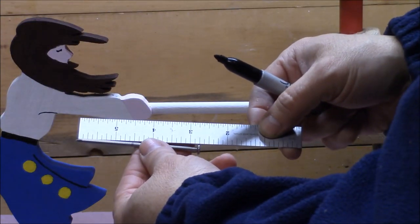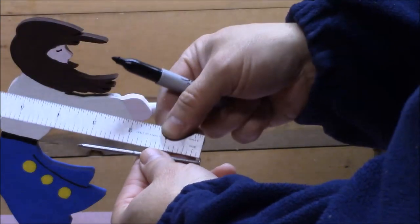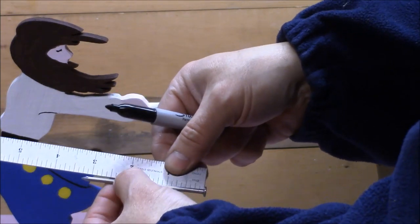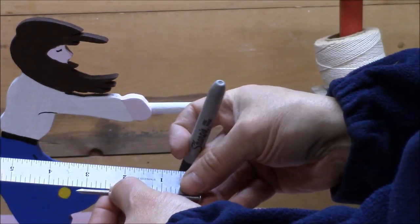I'll measure that distance, which is one and a half inches. I'll measure that from this end, mark it, and cut off what I don't need.